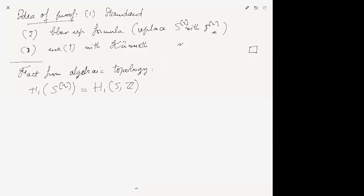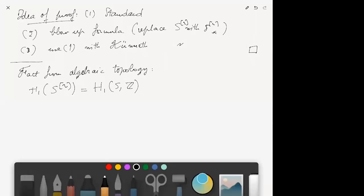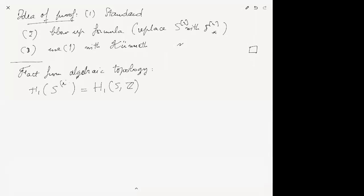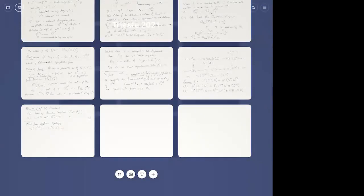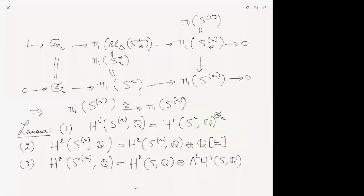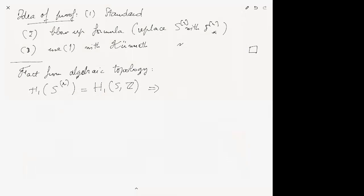So π₁ of the symmetric power is given by that topological fact. Using the computation that π₁ of the Hilbert scheme is isomorphic to π₁ of the symmetric power, and knowing that π₁ of the symmetric power is H₁(S), this means that π₁ of the Hilbert scheme can be identified with H₁(S) as well.